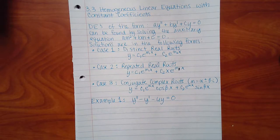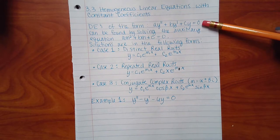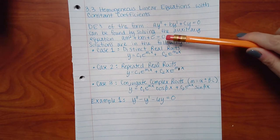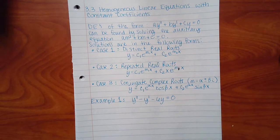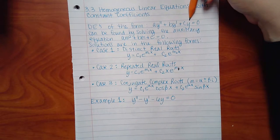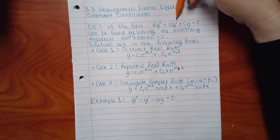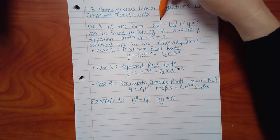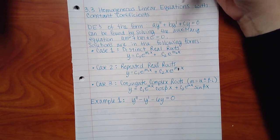You'll be given the three cases on your formula sheet, but you won't be given how to convert the DE into an auxiliary equation — you should know that. For a constant-coefficient DE, the number of primes on y becomes the exponent on m: no primes gives the constant, one prime gives m to the first power, two primes gives m squared.